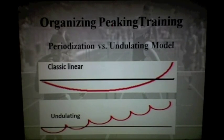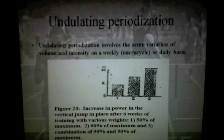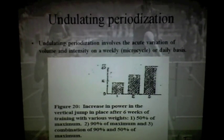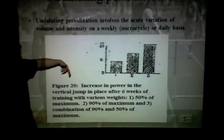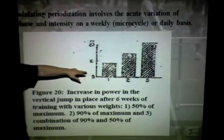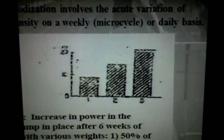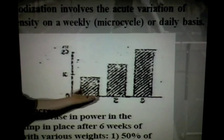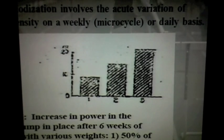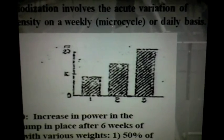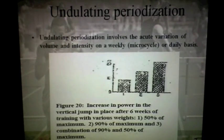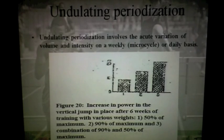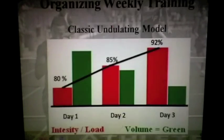With the undulating model, you essentially peak every week using a combination of loads throughout the week. This is based on research by Dr. Bondarchuk: group one used 50% of maximum weight, group two used 90%, and group three used a combination of both. Group three got the best results. I've trained athletes in the 400 who used this undulating model and they ran the world's fastest times two weeks apart — college track athletes.